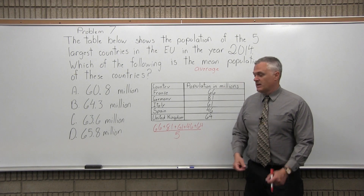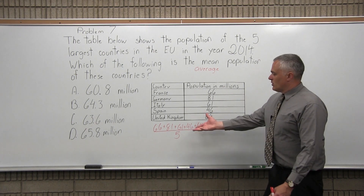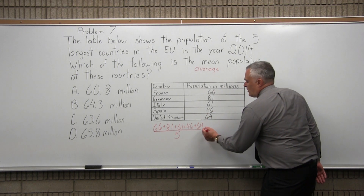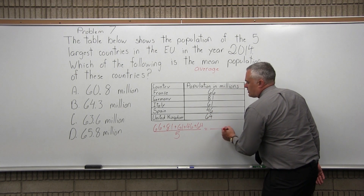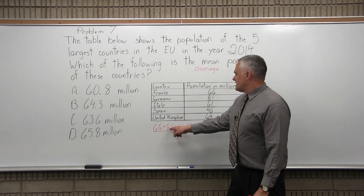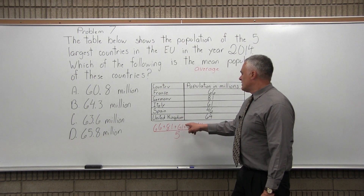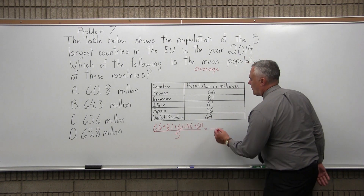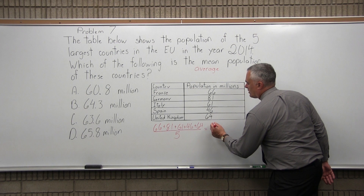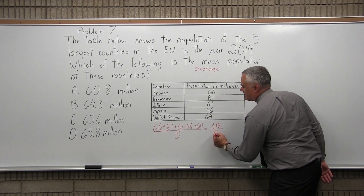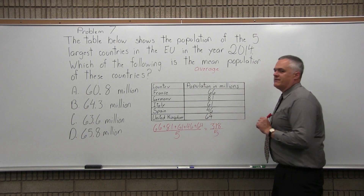Five countries, we divide by five. If there were 11 countries, we would divide by 11, but we have five. When I add up the top, 66 plus 81 plus 61 plus 46 plus 64 gives me a total of 318. I am going to have to divide that total by five.